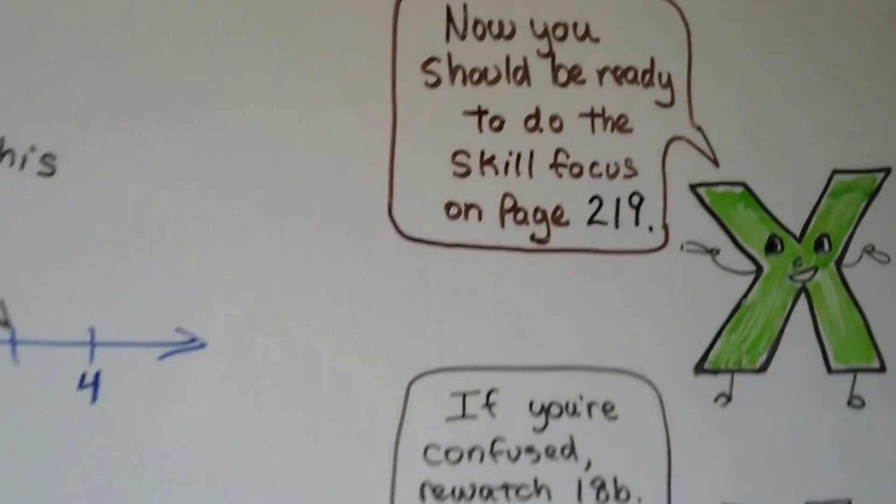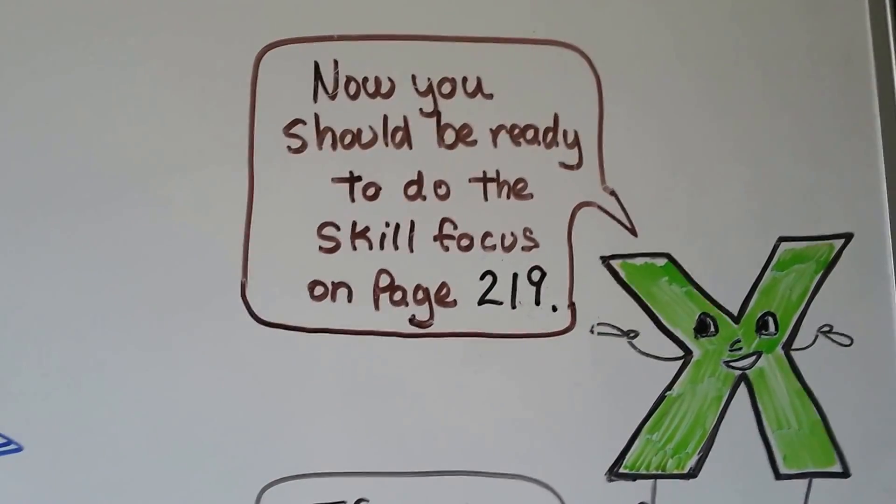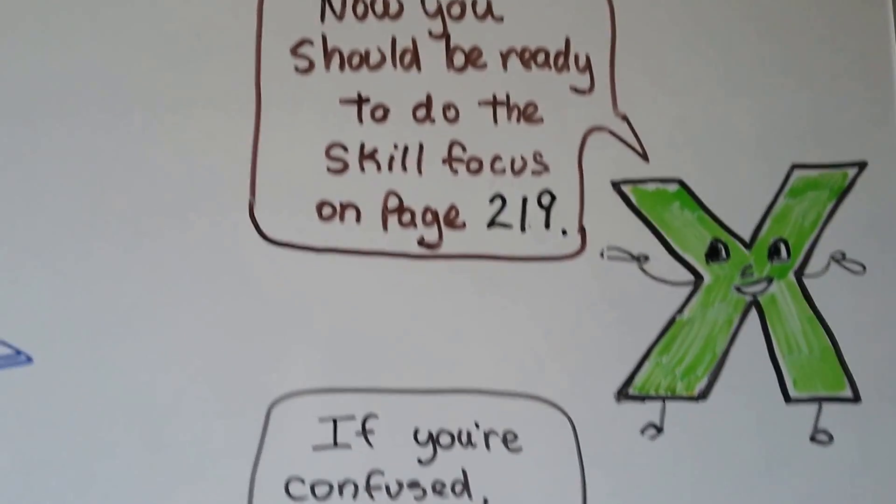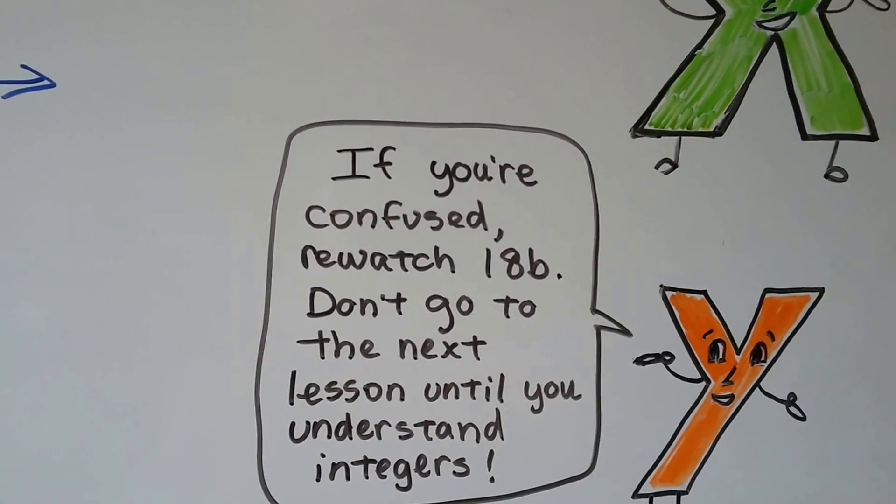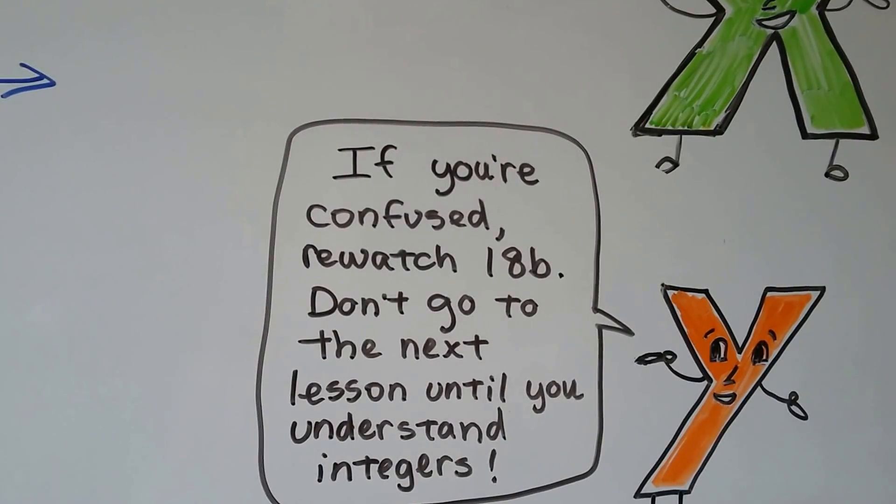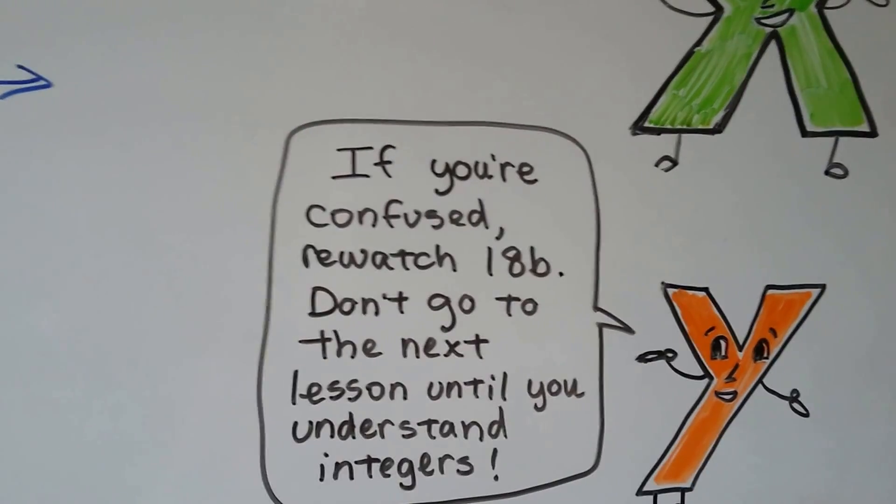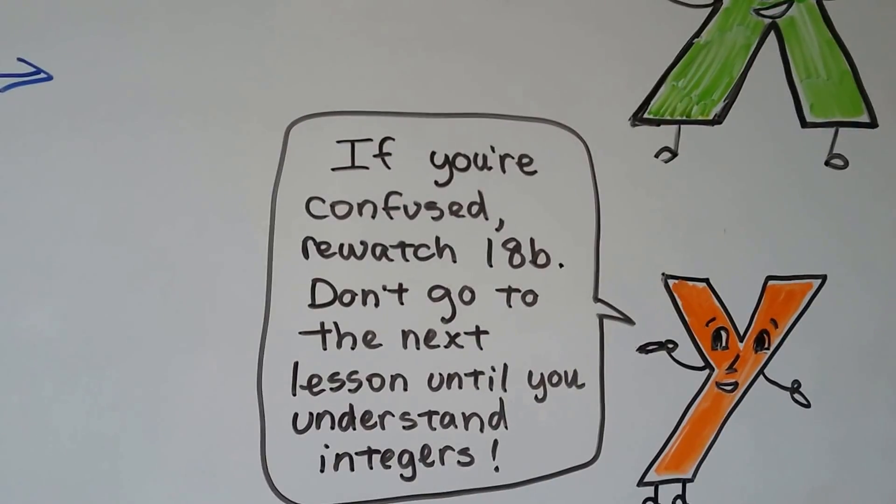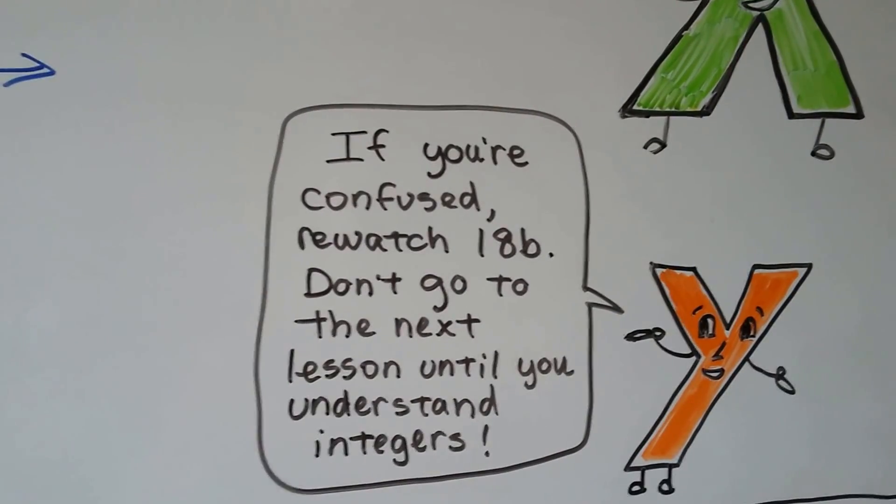So you should be ready to do that skill focus on page 219. If you get confused, just reread the problem a couple times. And if you're confused and having a lot of trouble on the skill focus, re-watch 18B, because we talked about adding and subtracting integers. But don't go to that next lesson until you understand integers. Do not move forward until you understand adding, subtracting, multiplying, and dividing integers.